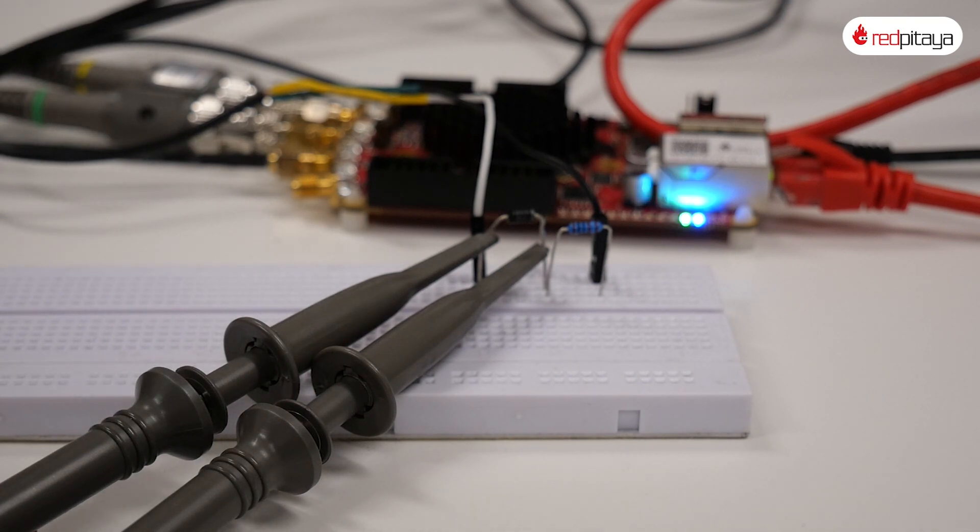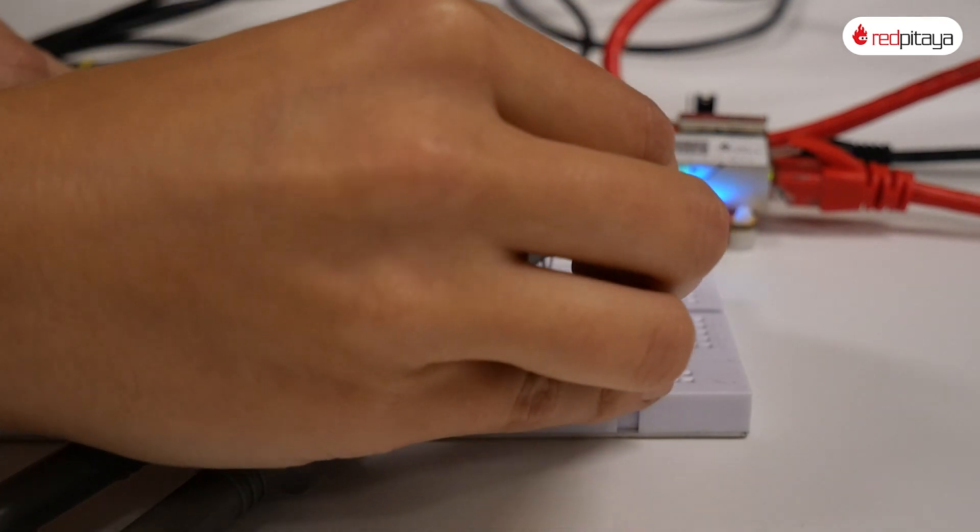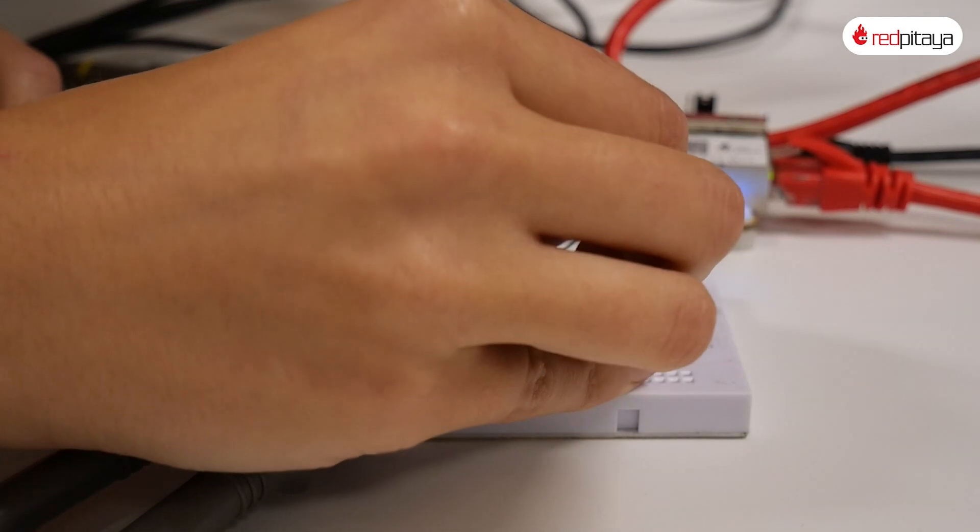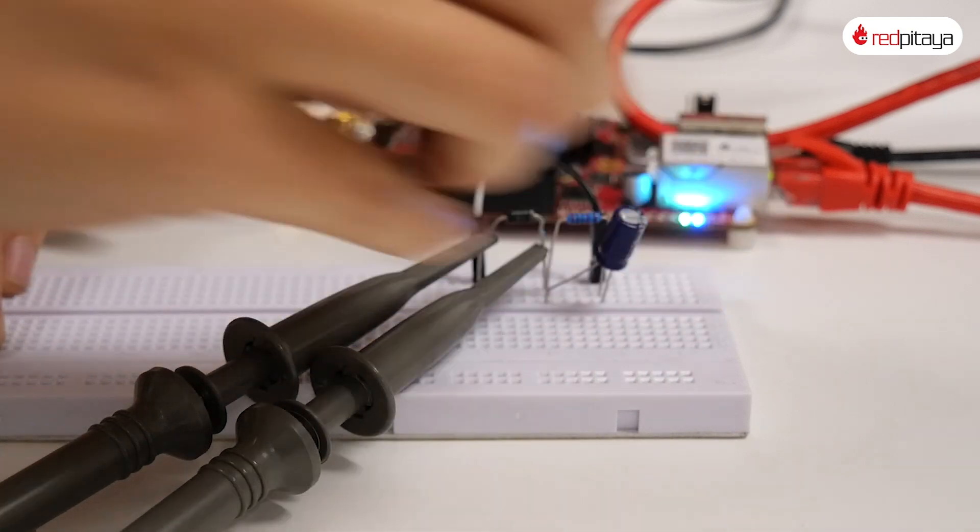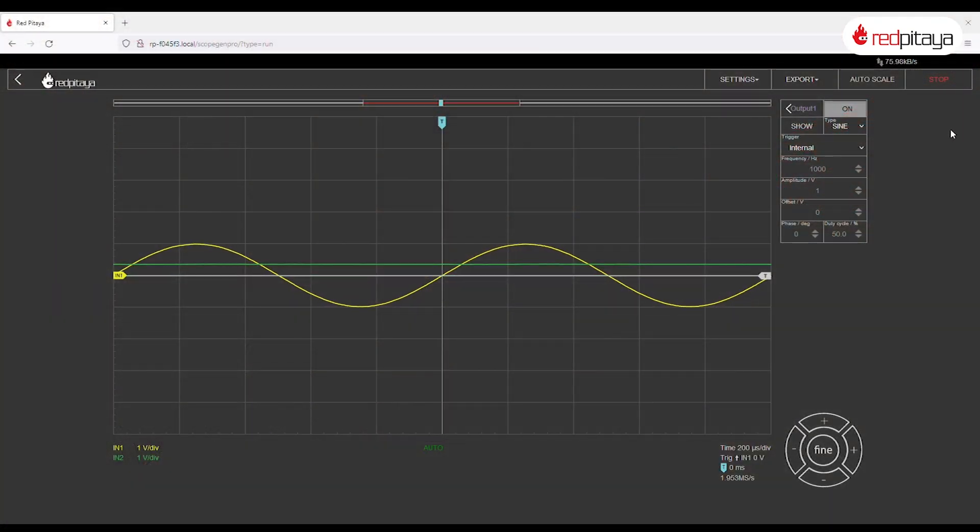We only need to smooth out the output signal. How? By adding a capacitor in parallel to the load resistor, like so. And BAM! The result is this - a DC looking signal. We did it! Time to go home. And no, this video isn't long enough.